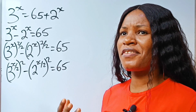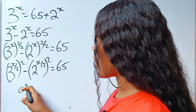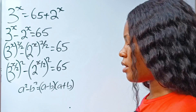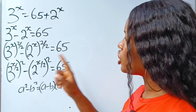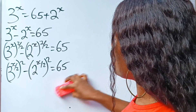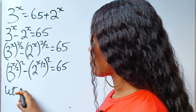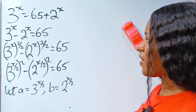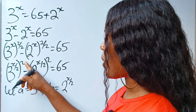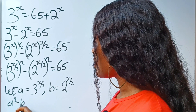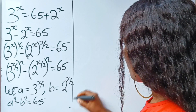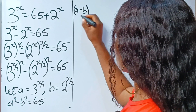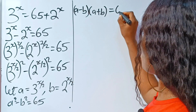Now we have difference of two squares. And what does difference of two squares say in algebra? It says that a squared minus b squared is equal to a minus b multiplied by a plus b. Now, we need to simplify the equation by letting a equal 3 to the power of x over 2 and b equal 2 to the power of x over 2. So we have a squared minus b squared is equal to 65, which means a minus b multiplied by a plus b is equal to 65.